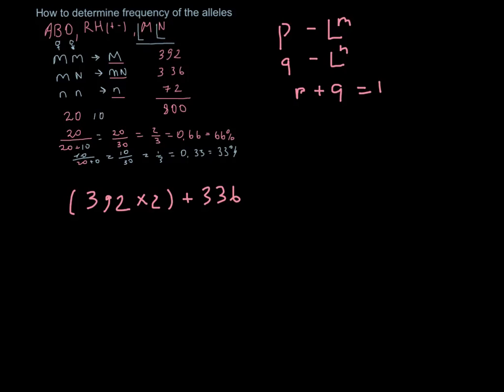we just use the formula 392 multiplied by 2 plus 336. Why do we not multiply